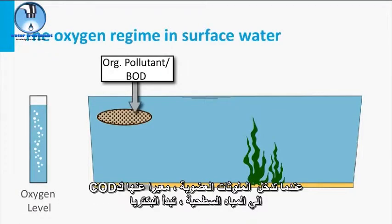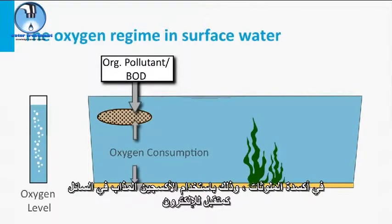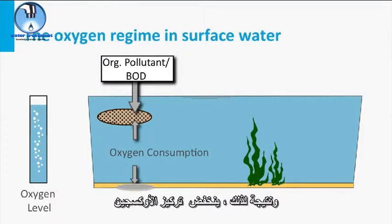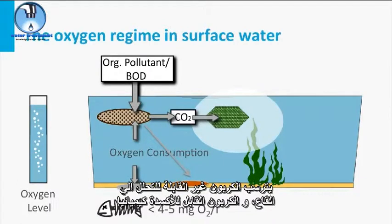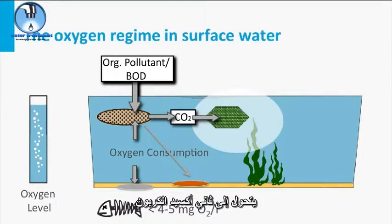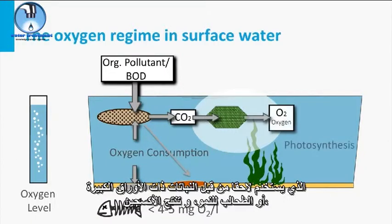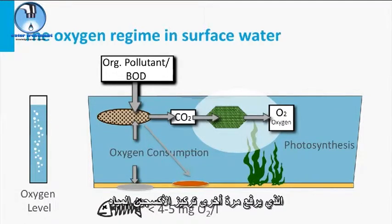When an organic pollutant expressed in BOD enters the surface water, bacteria start to oxidize the pollutant using the liquid dissolved oxygen as an electron acceptor. As a result, the oxygen concentration drops. Fish will die off when the concentration drops below 4 to 5 mg per liter. The non-biodegradable carbon sediments to the bottom and the biochemically oxidizable carbon is transformed to carbon dioxide. This CO2 is subsequently used by macrophytes or algae for growth, while producing oxygen, which again raises the water oxygen concentration.